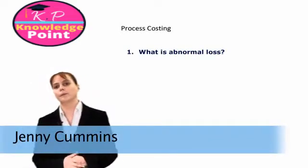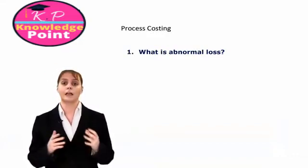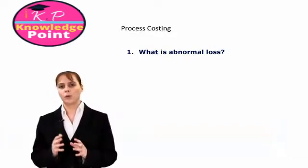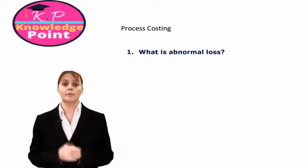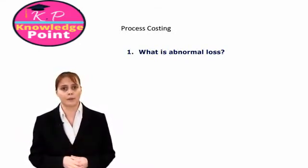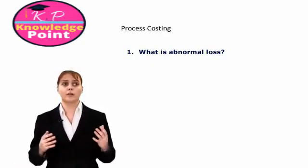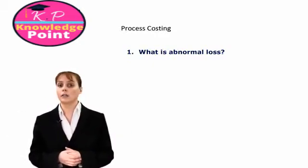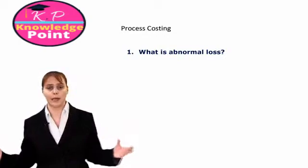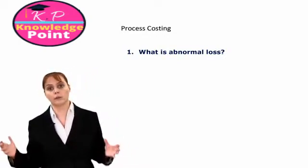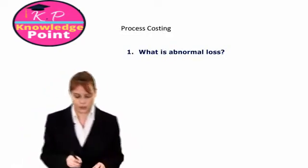We saw in the prior session that a company expects to lose a number of units as part of their normal production process, and that is called our normal loss. But what happens if we lose more units than we expected to lose? Perhaps our input is a thousand units and our expected output is 900 units, but then maybe our actual output is only 850 units, so we have lost more units than we planned. If we lose more units than we expected to lose, then we have an abnormal loss. So abnormal losses are unexpected losses in our production process.